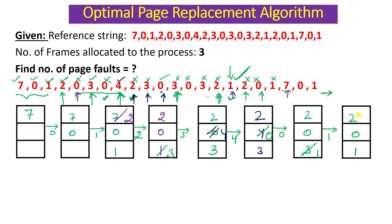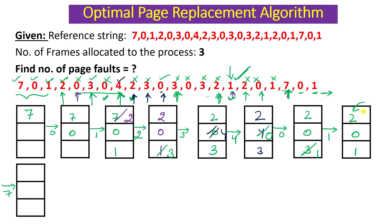Now page 7 comes and generates a page fault because seven is not in any frame. I need to replace one of: 2, 0, or 1. Looking ahead from this point: zero is here in the future, one is here, but two is not in the remaining reference string — meaning two will not be used again. So two can be replaced. New frame contents: 7, 0, 1. Seven generated a page fault.